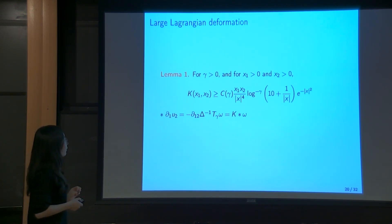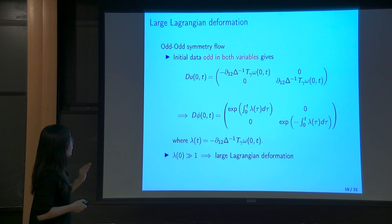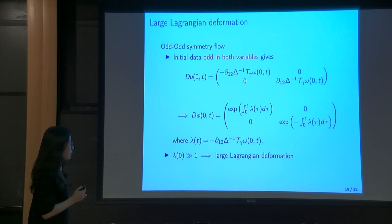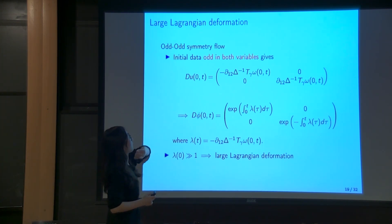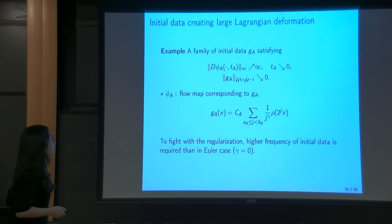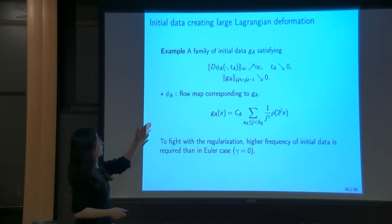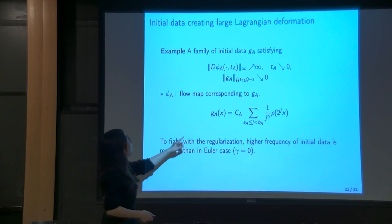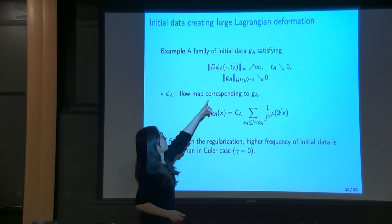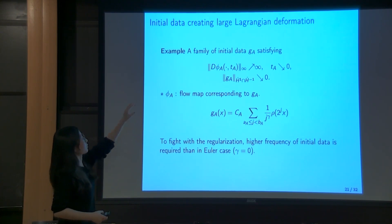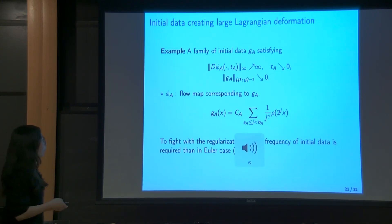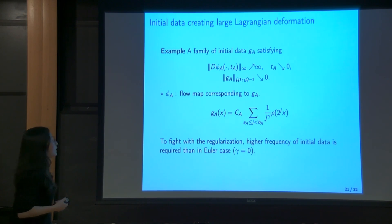In the estimate, the first part corresponds to the explicit formula of the Riesz-type operator, and the remaining part explains the effect of the regularizing operator. Using this, we can get large Lagrangian deformation by using initial data which is odd in both variables and has large derivative velocity at the origin. Let me give one example of a family of initial data whose Lagrangian deformation grows larger in shorter time while the initial data itself gets smaller in the borderline space norm. The smallness is needed because a subsequence of this family will be used as a local piece of the perturbation.